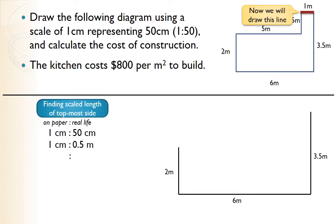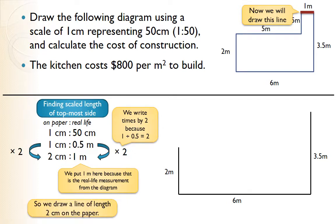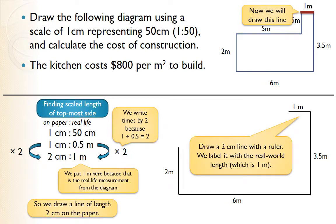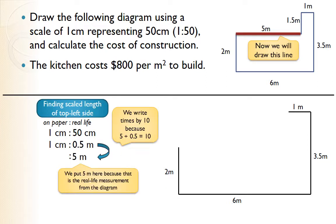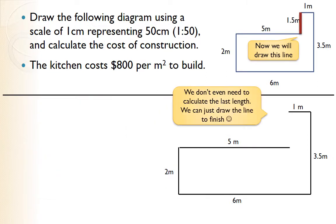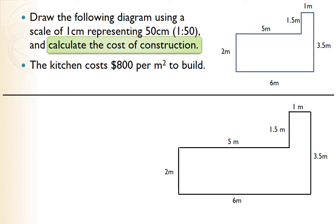The remaining sides use exactly the same method. For the very last side we don't actually need to do the full calculation — it's simply the line that joins the two endpoints, so there's only one possible length. Finish it off and remember to label that length with the real-world measurement. The scale diagram is now complete.